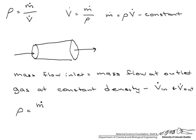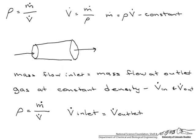Well if the density is constant, and we know that the mass flow rate is constant, then the volumetric flow rate is constant. So the volumetric flow rate at the inlet has to equal the volumetric flow rate at the outlet. This again is only if it is at constant density.